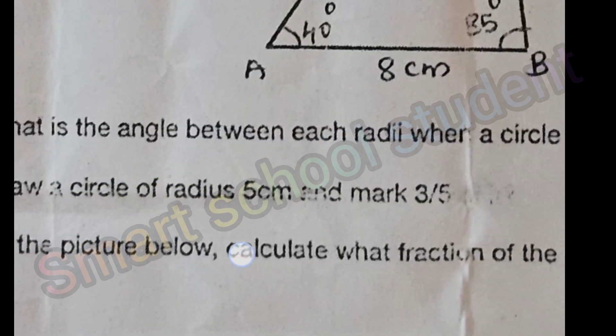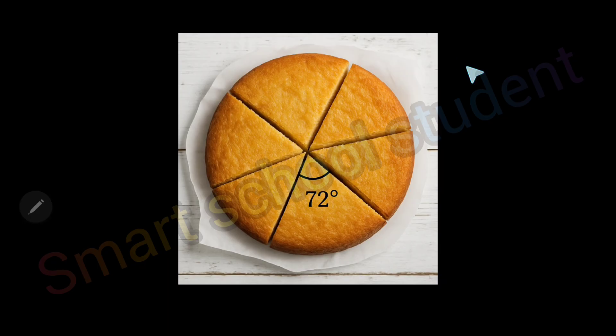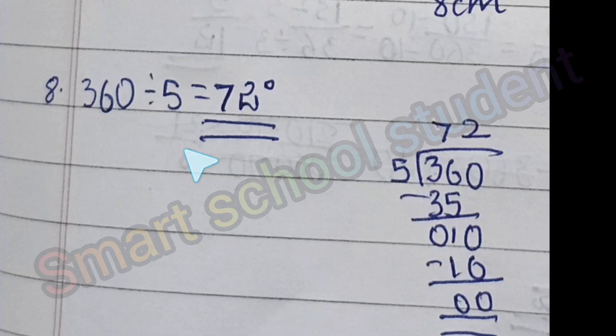Next question, draw the following picture according to the measurements given. What is the angle between each radii when a circle is divided into 5 equal parts? We just draw a cake and the angle of a circle. So I have 5 parts: 1, 2, 3, 4, 5. This is a radius, this is a radius. I know that total degrees in the circle is 360 degrees, so 360 divided by 5, that is equal to 72.